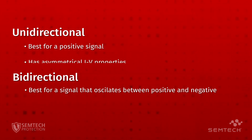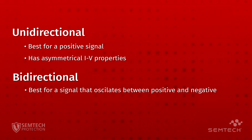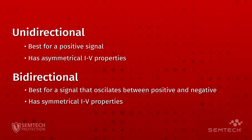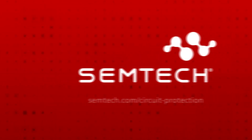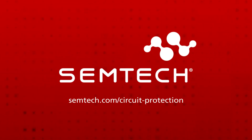To summarize, a unidirectional TVS device has asymmetrical IV properties, whereas a bidirectional TVS device has symmetrical IV properties. To learn more about ESD protection solutions, visit semtech.com and check out their ESD related application notes.